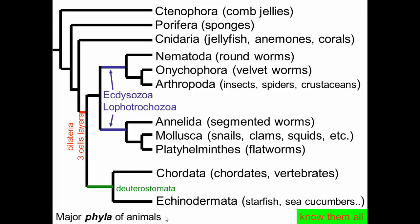These are the major phyla of animals, so you want to make sure you know all of them. Remember, there were actually far more phyla than this in the Burgess Shale during the Cambrian explosion. These are the major ones for which we have living members. There are a few other phyla not illustrated here, because to have them all would make the tree too big.